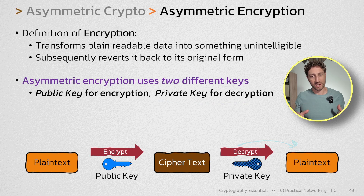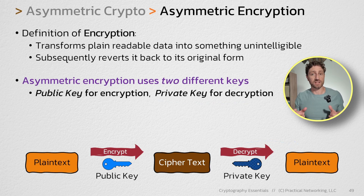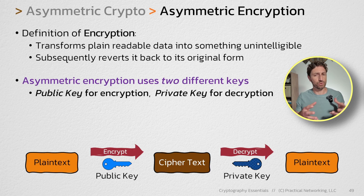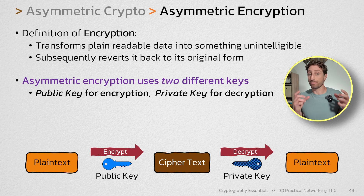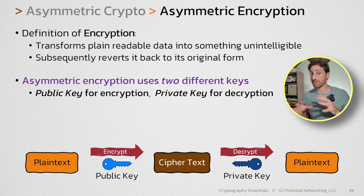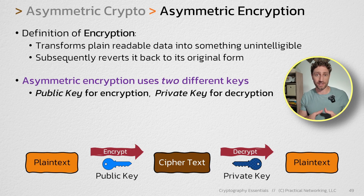And if you think about it, this is the only thing that makes sense. If you could encrypt something with the private key, that would mean the public key could do the decryption — which means anybody could do the decryption, and you wouldn't want that. Instead, it only makes sense if the public key is doing the encryption, and only whoever has the private key, which was never shared, can undo that encryption and decrypt the original content.